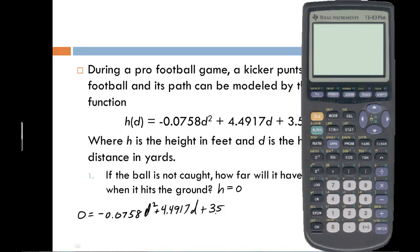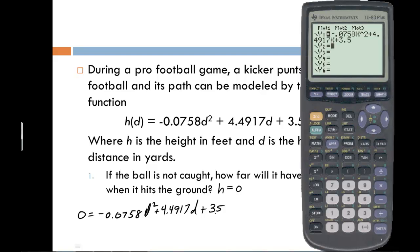We can go to the y equals screen. Once we have the right side of the equation typed in, we need to graph it. In order to graph it, we need to set up the window. For the window, we know the x's represent the distance that the ball has traveled. Zero represents where the kicker is standing, and most punts probably aren't going to go over maybe 70 yards, so let's just say zero to 70.